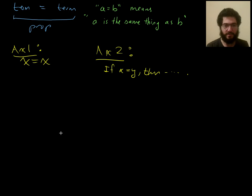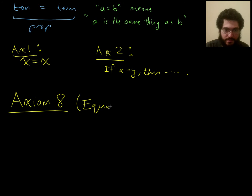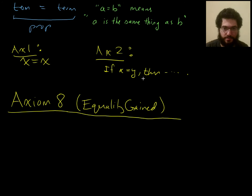So this is what axiom eight is meant to help with. I'm calling this equality gained, just to give you a memorable title, as opposed to axiom two which was called equality used. And here's the way it works. If a certain thing is true, if you can prove what I'm going to write down here, then you can conclude A equals B.